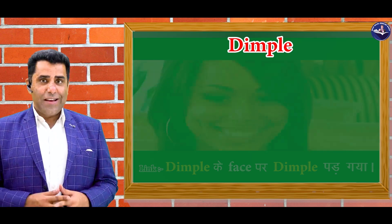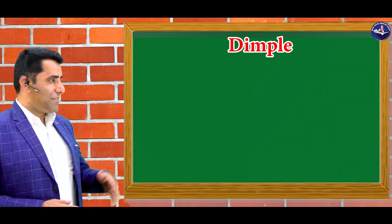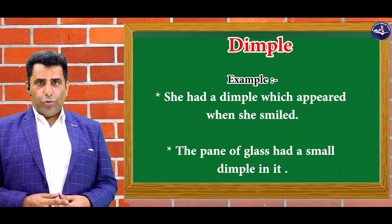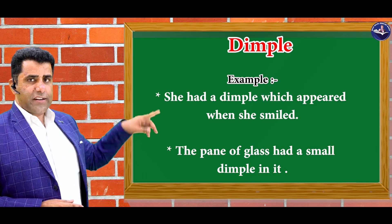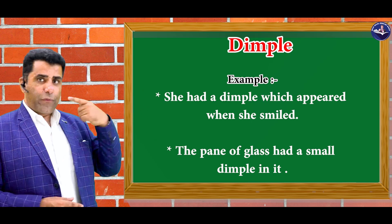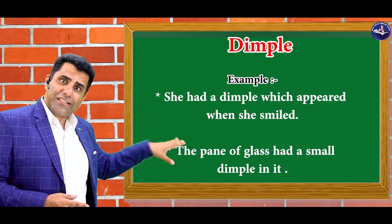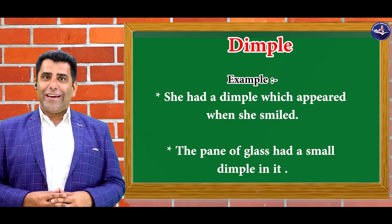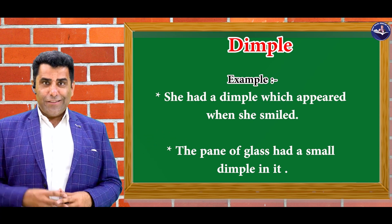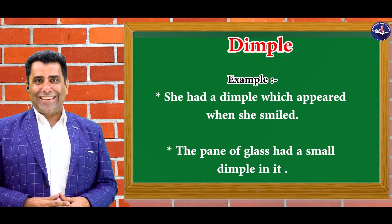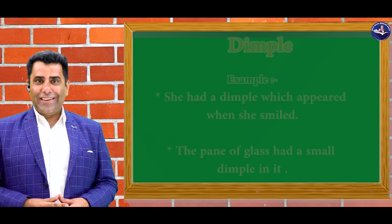Let's see the sentences on dimple. Aap dekh pa rahe hai — first sentence mein face ke liye use ho raha hai, aur second sentence mein glass ke liye bhi use hota hai, jis mein gadda ya darar pad jati hai.